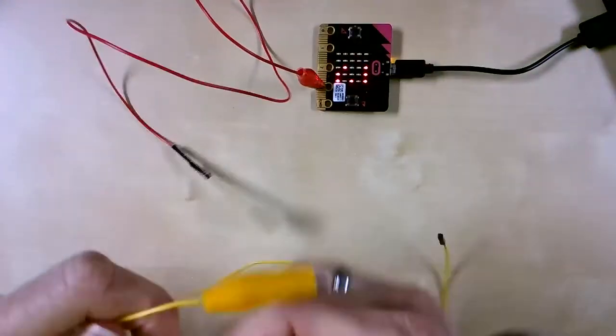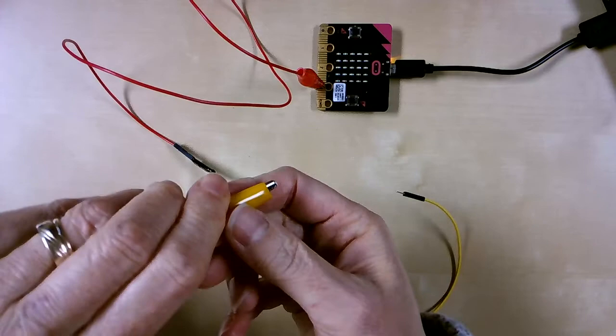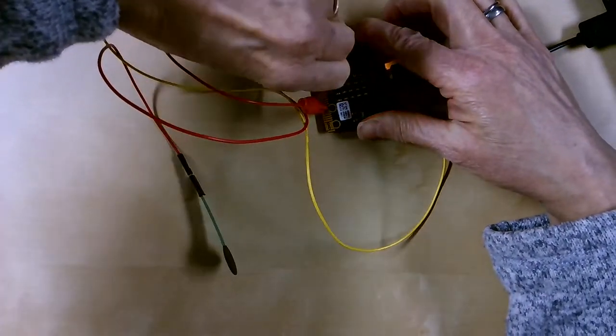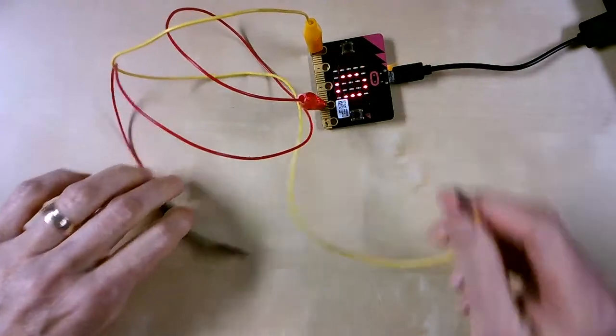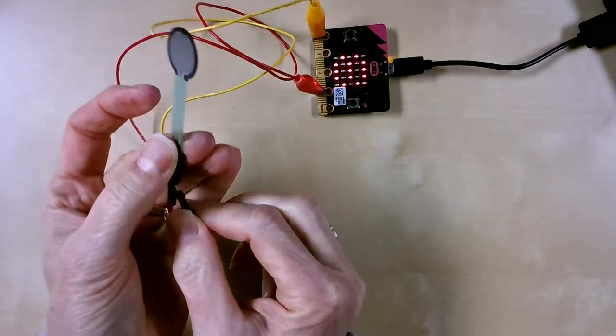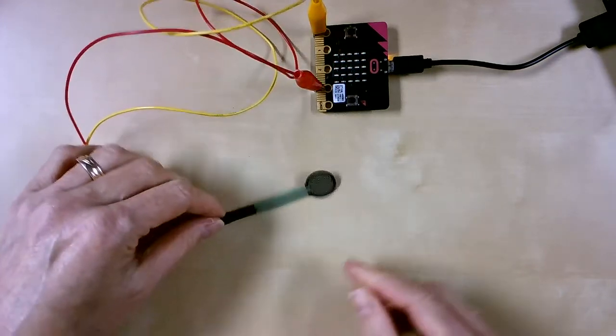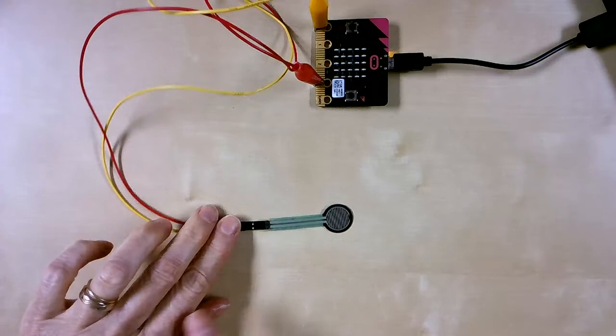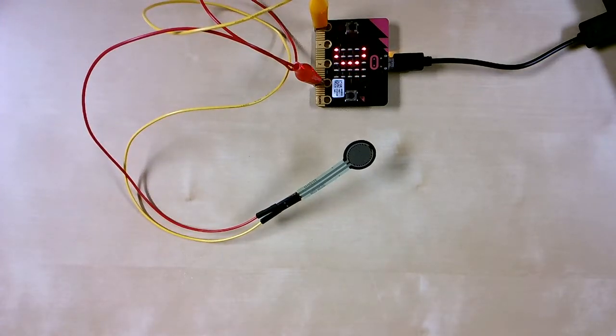Now I'm going to take my yellow alligator clip. Again, I still have my code on pin zero, so I'm attaching it to pin zero and then I'm going to plug the other end into this pressure sensor. I can see that it's sort of floating in the air, so I'm just going to tape it down.